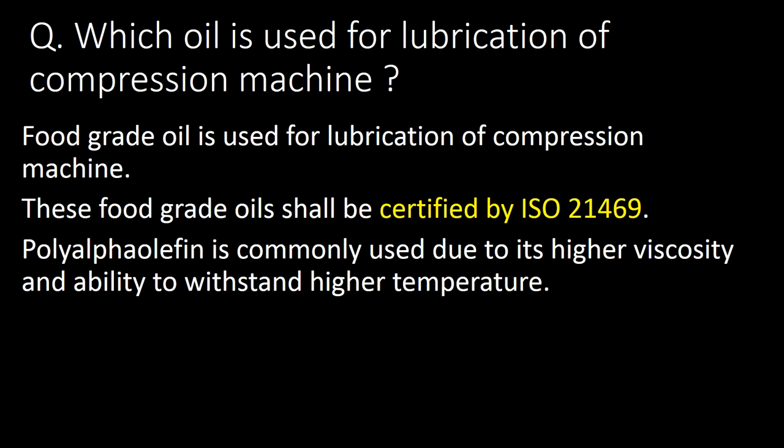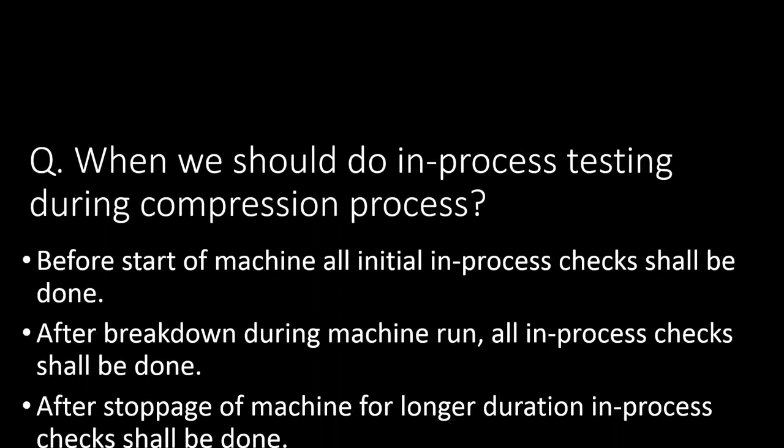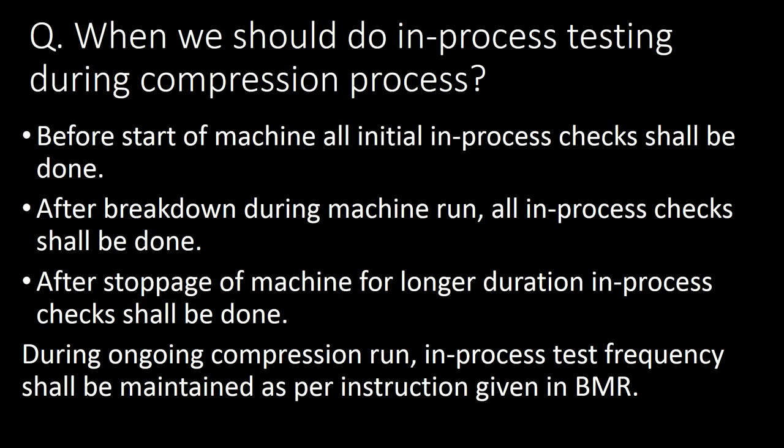Which oil is used for lubrication of a compression machine in the pharmaceutical industry? Food-grade oil is used for lubrication of compression machines. These food-grade oils shall be certified by ISO 21469 certification. Poly alpha-olefin is commonly used due to its high viscosity and ability to withstand higher temperatures.